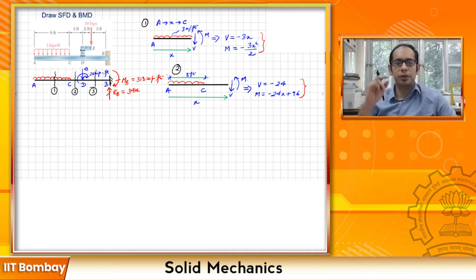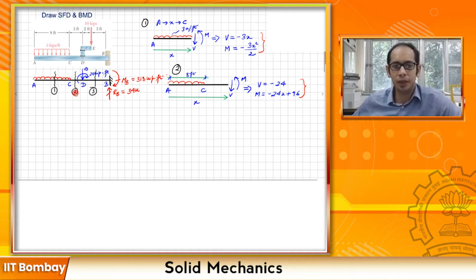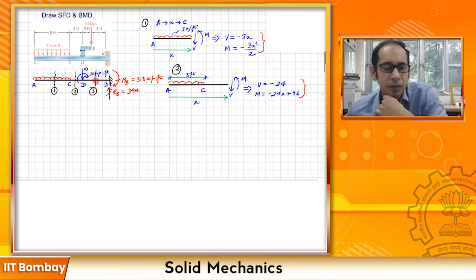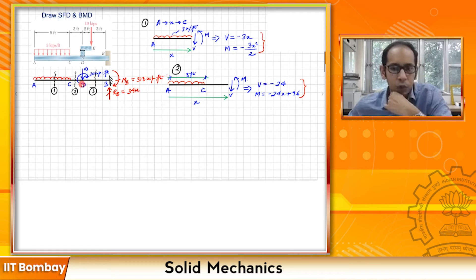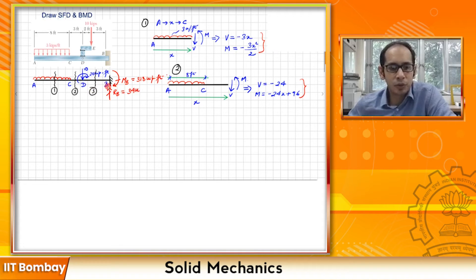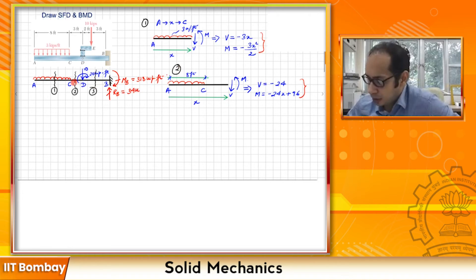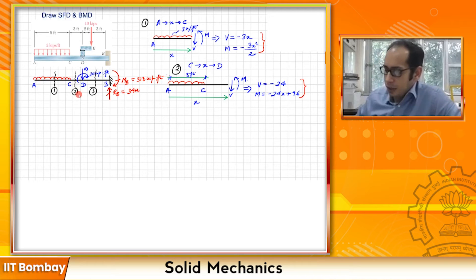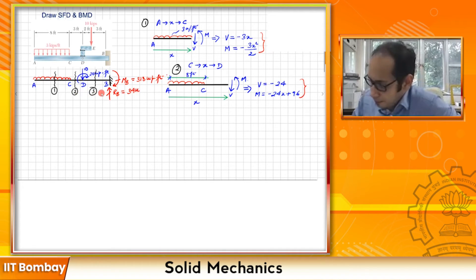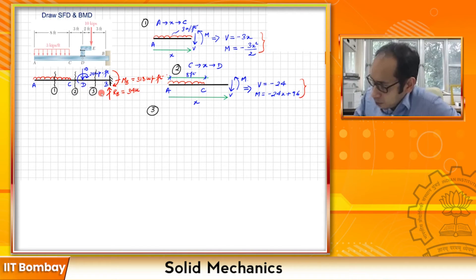The last section is section 3. Looking at it, going from left to right would require dealing with the UDL, the point load, and the point moment. However, going from right to left only requires dealing with reactions R_B and M_B. So for section 3 it is wiser to go from B toward D. Section 3 covers D to B, or going from B to X to D, measuring x from B.